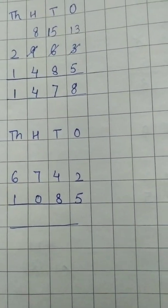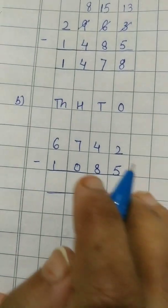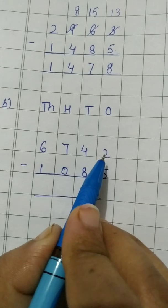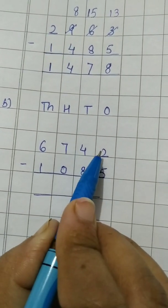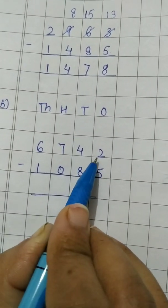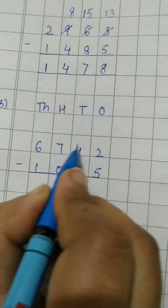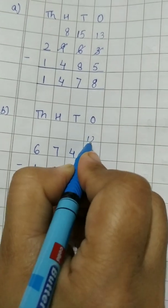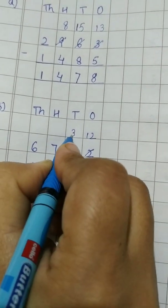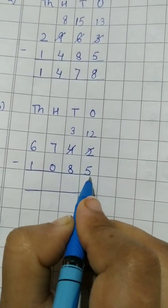B part. Here we have 2 and 5. 2 is smaller than 5. So it will borrow from the next friend. When this 4 will give 1 to this 2, it will become 12. And this 4 will become 3. Now 12 minus 5.